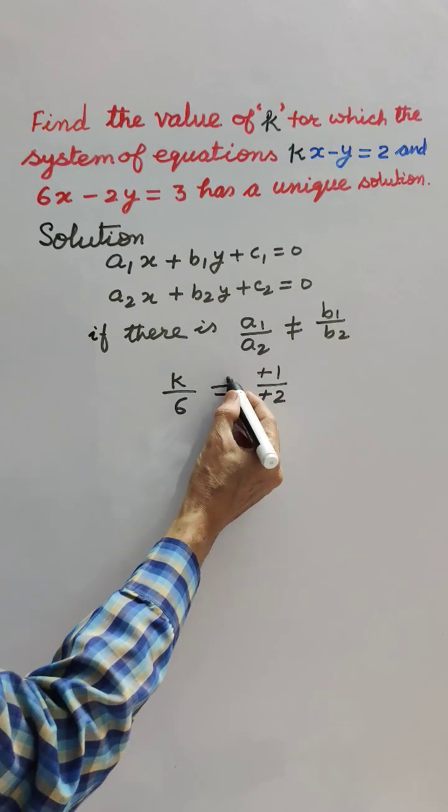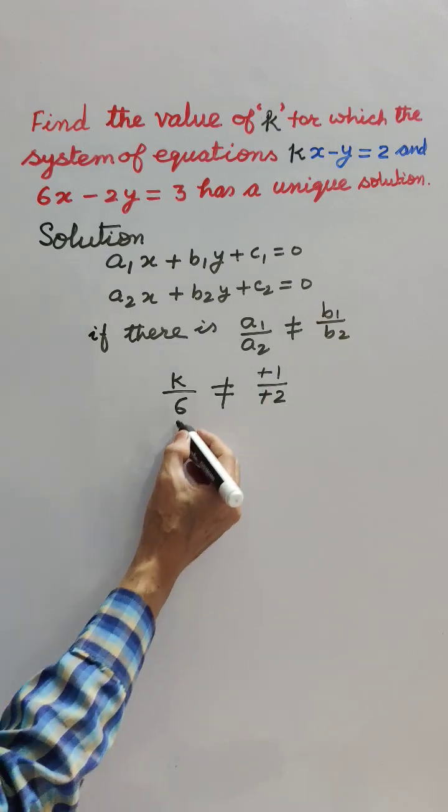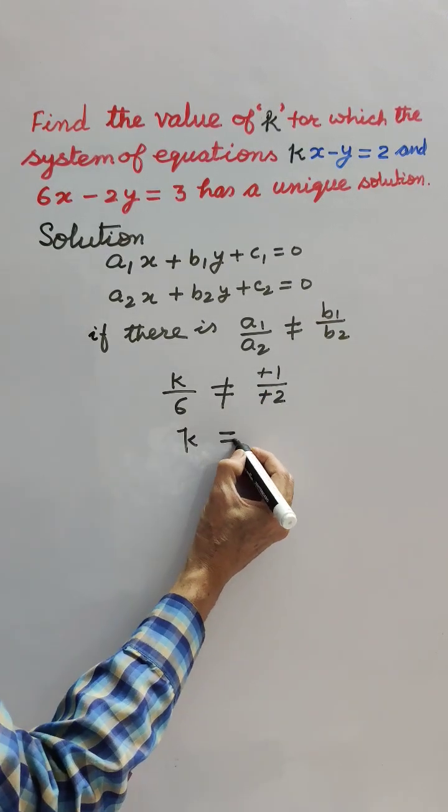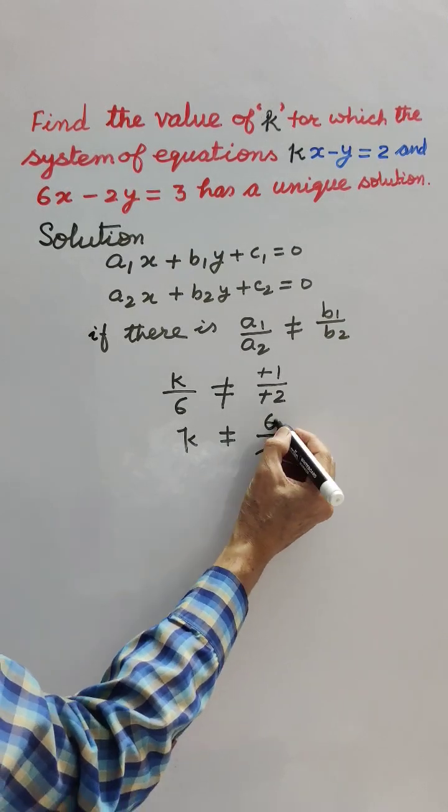k upon 6 is not equal to minus 1 upon 2. This way k is not equal to 6 upon 2. 2 times 3 is 6.